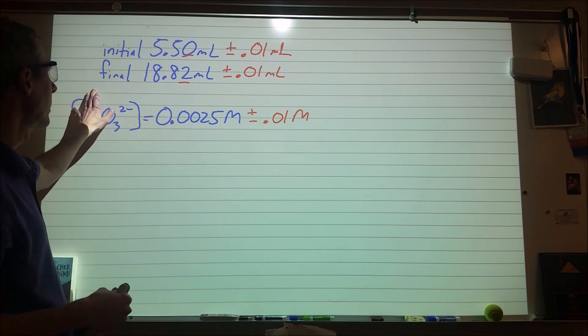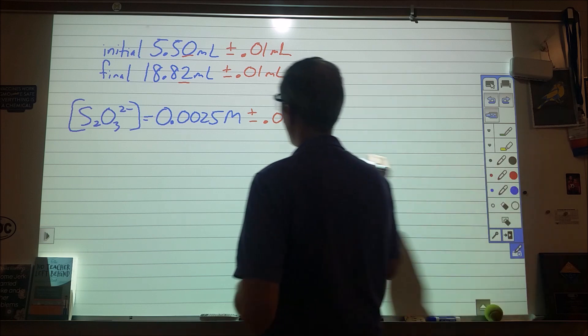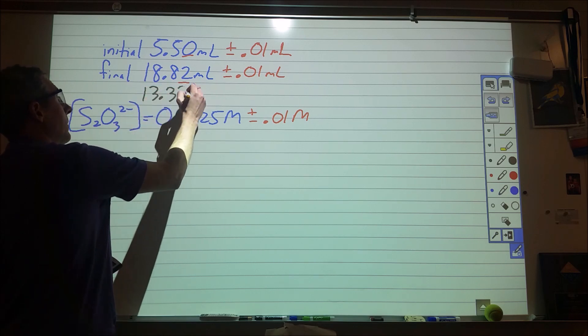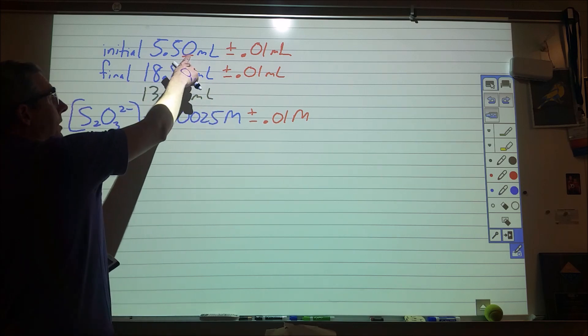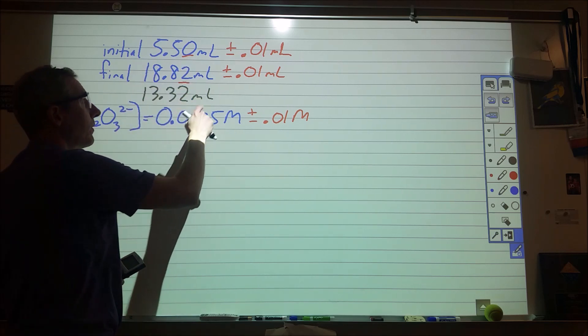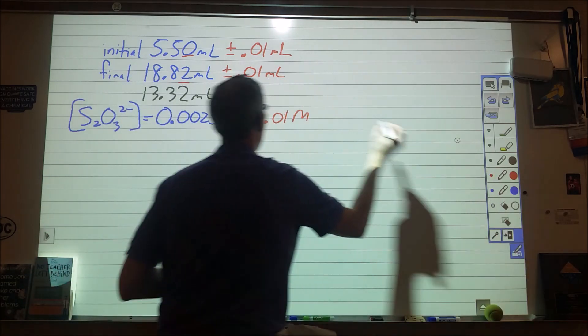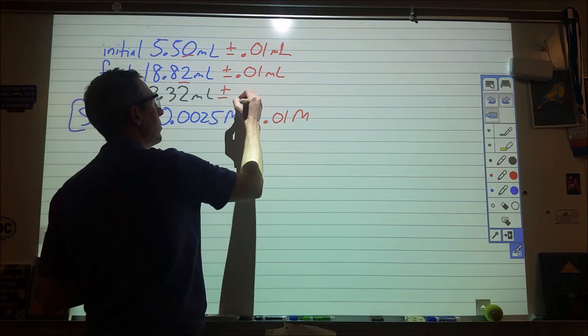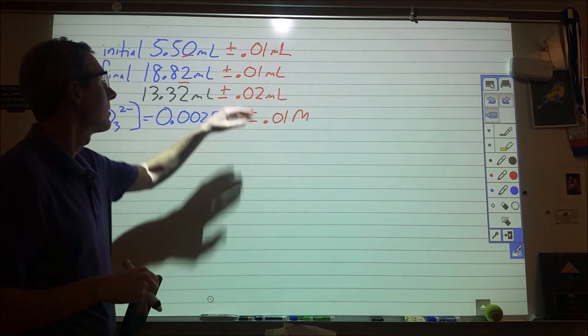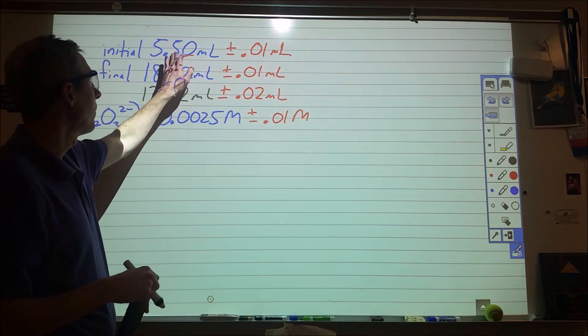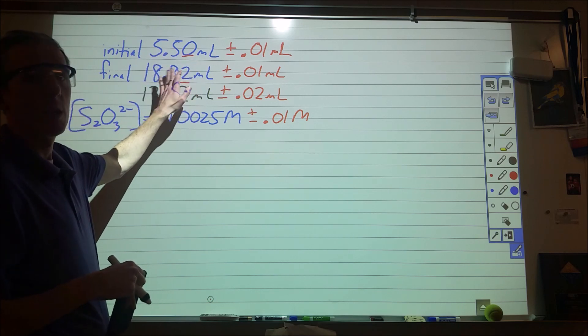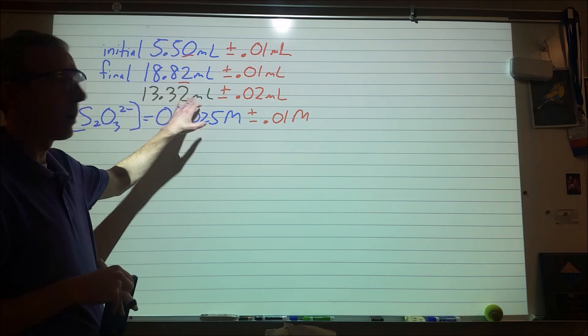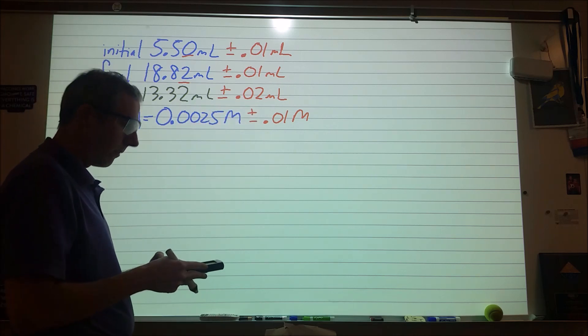The first thing we need to do is figure out how much the volume of the thiosulfate solution was actually added in order to get to the endpoint. For that we just take this and subtract this from it, and that comes out to 13.32. As far as sig figs go, because we're doing a subtraction, we're going to go based on place. But for our error there, we're going to combine those two errors. When you add or subtract error, you have to combine them. So 0.02 milliliters. That makes sense—this could be 5.49 or 5.51, and this could be 18.81 or 18.83, so the sum could be 13.30 to 13.34.